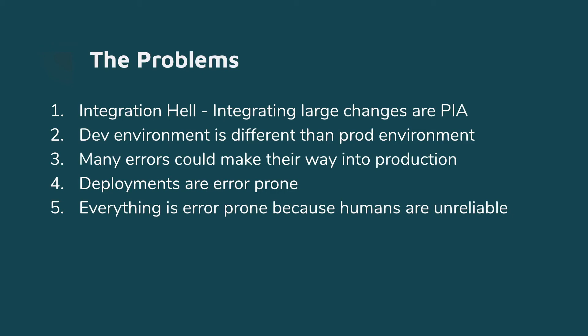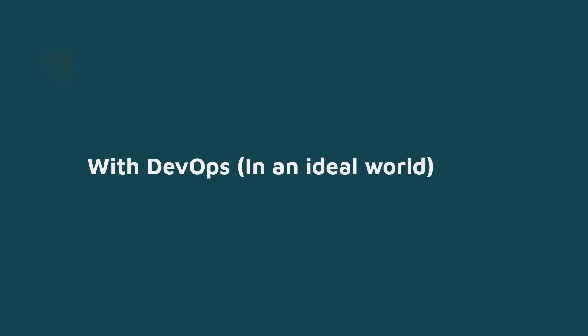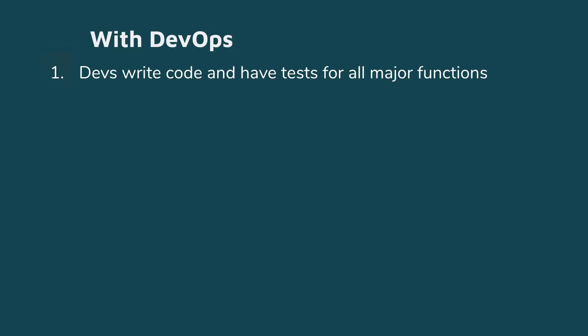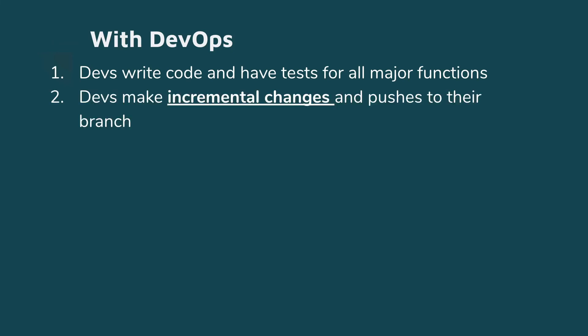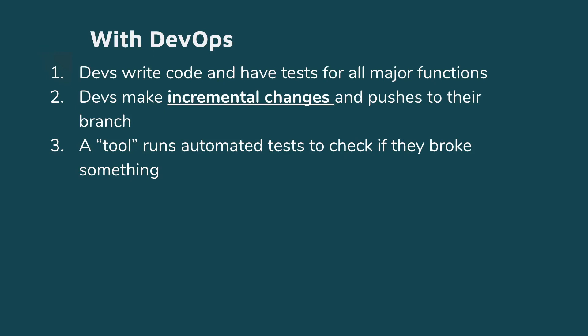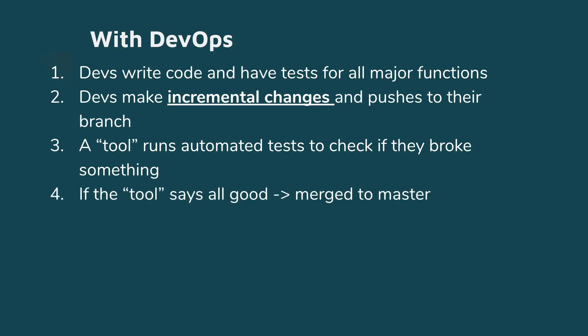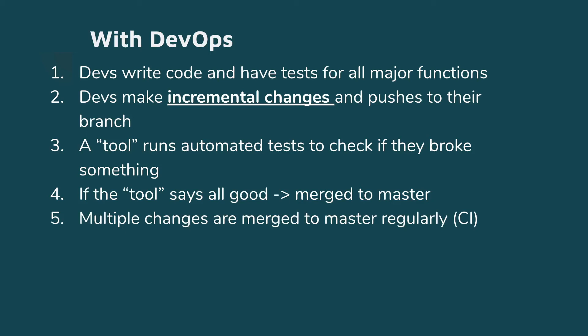Let's talk about how this would work in an ideal world with a properly implemented DevOps culture. The developers write code and will have tests for all the major functionalities — ideally for all functionalities. After making any change they run the tests to make sure everything works as expected and doesn't break any other functionality. The key here is incremental changes. This incremental change gets merged to the master branch as soon as possible. After incremental changes are pushed, a tool runs automated tests to make sure everything is working. This prevents catastrophic failures like a developer's changes breaking another major functionality.